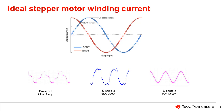On the other hand, while fast decay can keep the current within regulation, it causes lowered average current and can cause an unexpected flat zero current section, as shown in example 3.